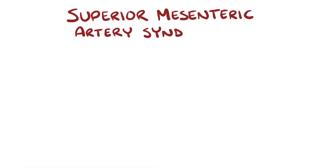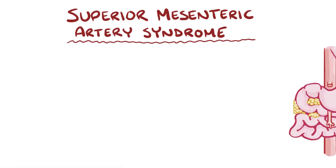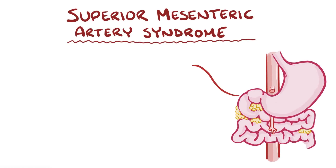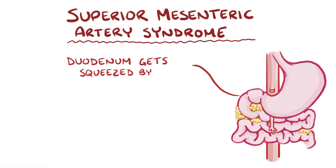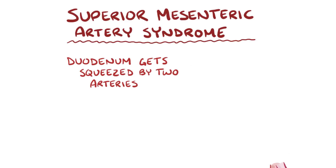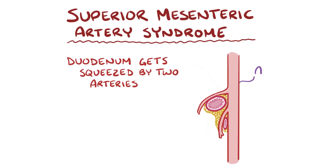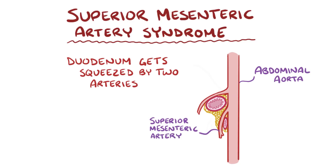Superior mesenteric artery syndrome is when the first part of the small intestine, which is the duodenum, gets squeezed between two large arteries: the abdominal aorta and the superior mesenteric artery. When the duodenum gets squashed, food can't easily pass by, and this leads to intestinal obstruction.